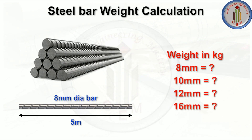Let's discuss how to calculate each diameter bar's weight per meter length, and if a bar is given for some length — say 5 meters or 10 meters — how we convert that into kgs. We will discuss each and every step to calculate the weight of steel bar in kgs. Without further delay, let's begin.